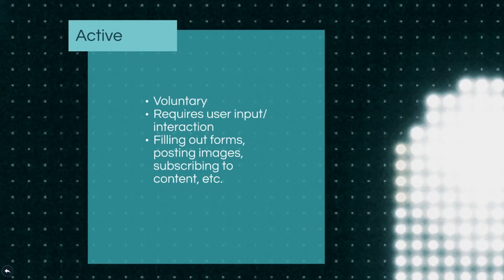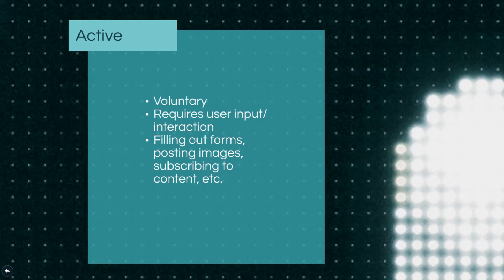The first category involves the active component of a digital footprint. This takes place when an individual voluntarily divulges information about themselves. One common example is registering for an account on a website, where you may be required to provide personal information. Other information an individual freely posts online, such as photos or comments, can also contribute to their digital footprint. By consciously consenting to share information online, this data can be collected, searched, and possibly even sold to other parties.